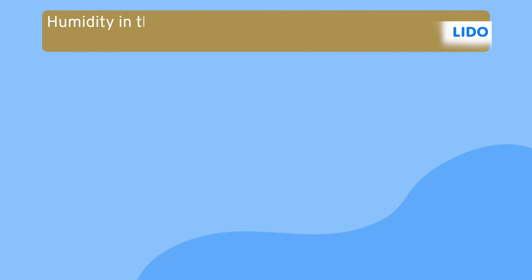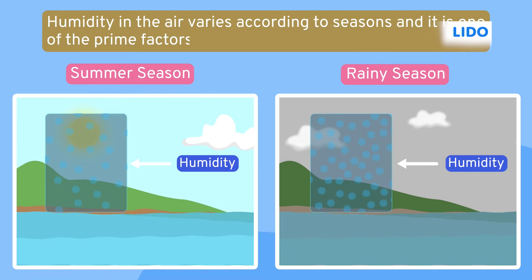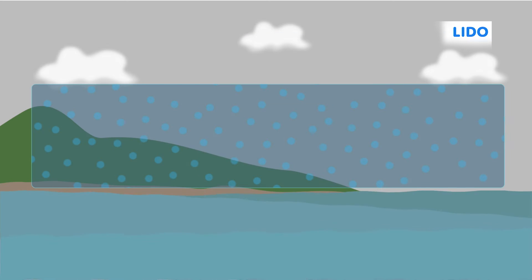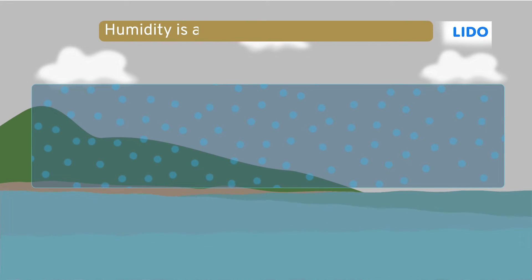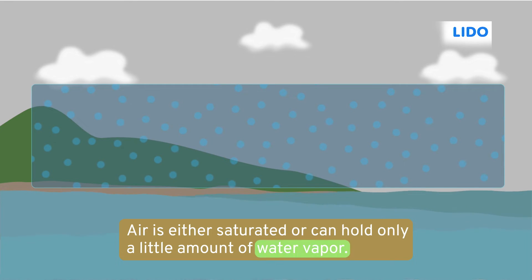Well, humidity in the air varies according to the seasons and it's one of the prime factors that affects the rate of evaporation. We know that humidity is the amount of water vapor present in the air and is high during rainy season. But air can hold only a definite amount of water vapor at any given time. Therefore, when the humidity is already high in the rainy season, the air is either saturated or can hold only a little amount of water vapor. This slows down the rate of evaporation and in such cases we don't sweat.